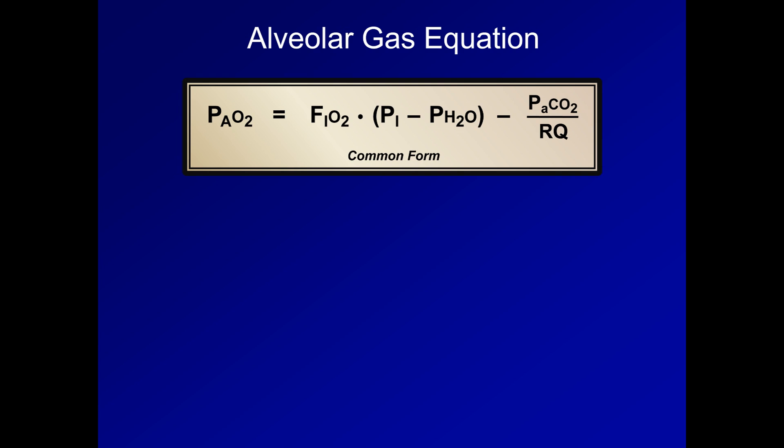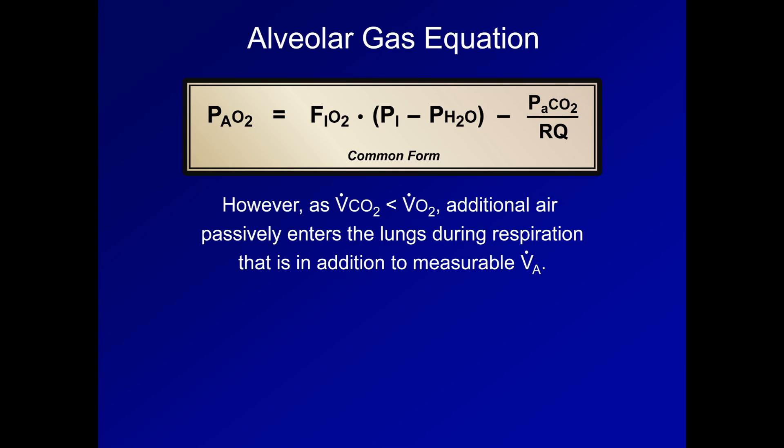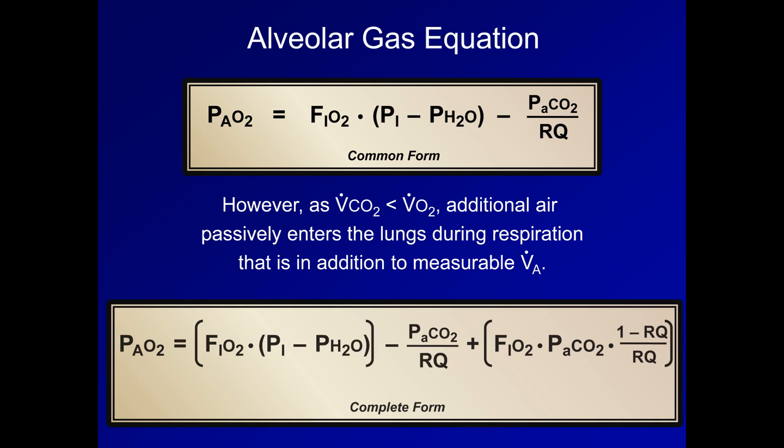The second alternative form acknowledges that because the rate of O2 consumption exceeds CO2 production, additional air passively enters the lungs during respiration that is in addition to active alveolar ventilation. I won't go through the somewhat tedious derivation that accounts for this effect, but here is the final result. It's the same as above with the exception of a lengthy additional term thrown onto the end. Luckily, although it technically makes the alveolar gas equation more accurate, this additional term is too small to be clinically relevant.